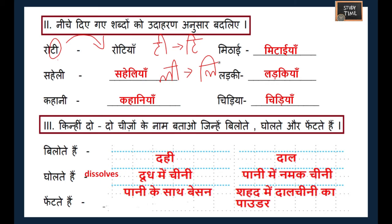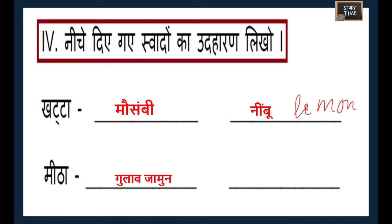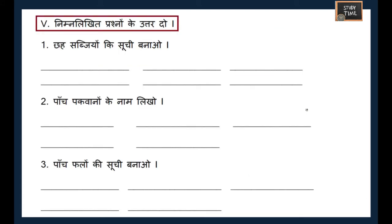The next exercise asks you to sort tastes — 'swad ka udaharan' with soar (sour) and meetha (sweet). Kata is sour, so mosambi and nimbu (lemon) are sour. Meetha means sweet, so gulab jamun, kaju ki barfi are sweet examples.